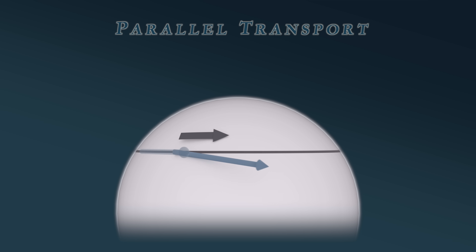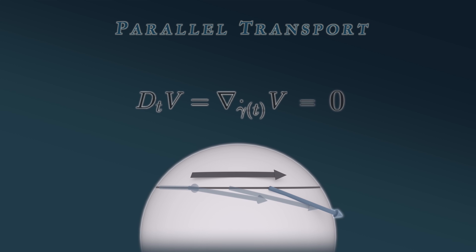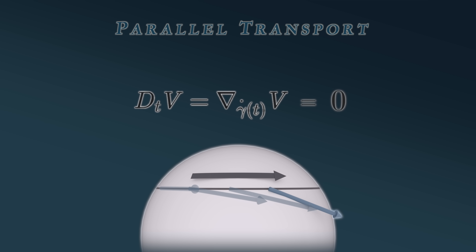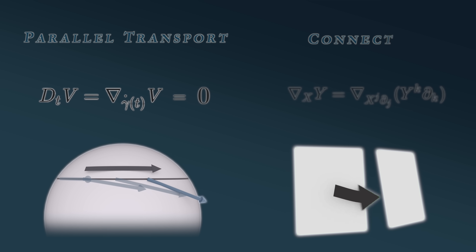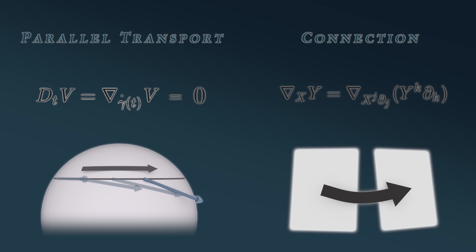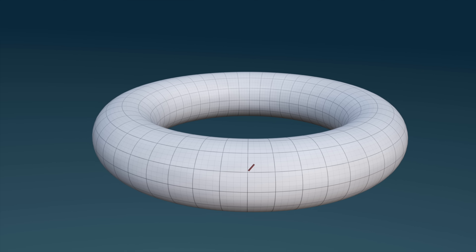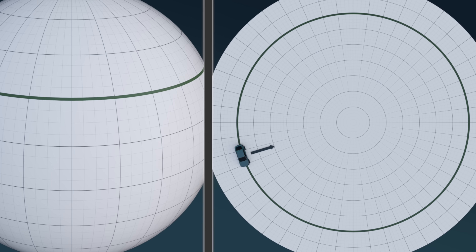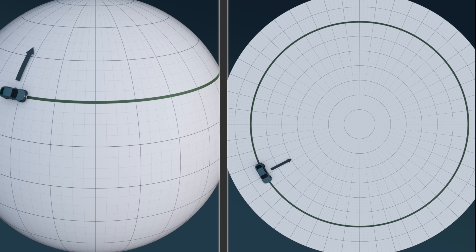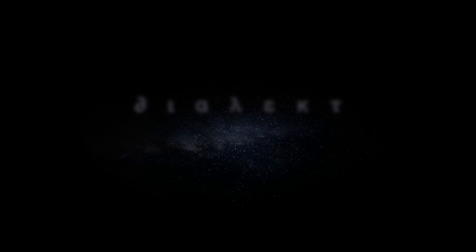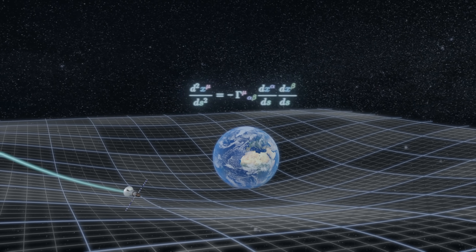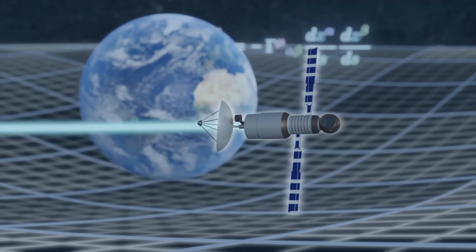On the path to Riemannian curvature lies the crucial concept of parallel transport. Though considered to be a difficult and intimidating mathematical abstraction, this concept and its immediate corollary, the notion of a connection, can in fact be grasped via very basic geometric intuition — in a manner so simple it renders the entire field of differential geometry almost immediately comprehensible. This is Dialect, and today we take another step closer towards mastering the formidable formalism of general relativity.